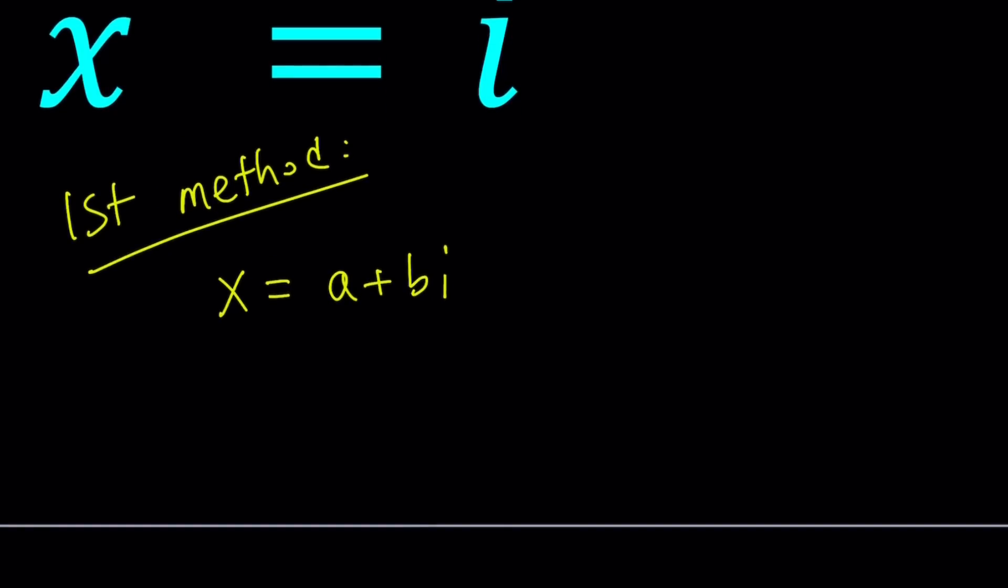So let's go ahead and square both sides. We get x squared equals a plus bi squared, and that equals i. So let's go ahead and expand what's on the left-hand side. And we're going to simplify it and set it equal to i, and then we'll find a and b values from there.